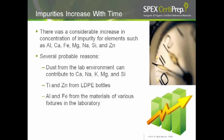Impurities can also increase with time. We found a considerable increase in concentration of elements such as aluminum, calcium, iron, magnesium, sodium, silica, and zinc. There are several probable reasons for this. Dust from the lab environment can contribute calcium, sodium, potassium, magnesium, and silica. Titanium and zinc can come from LDPE bottle caps. Aluminum and iron can come from materials of various fixtures used in the laboratory.